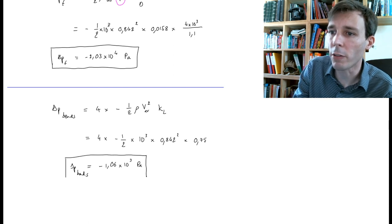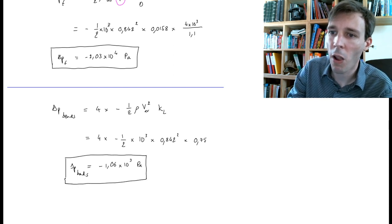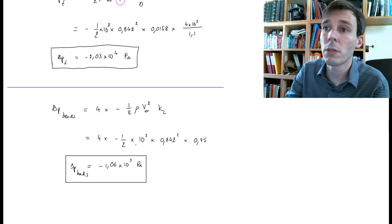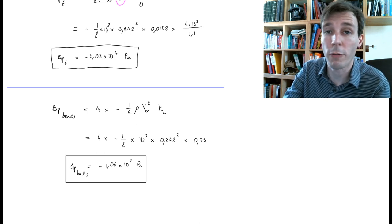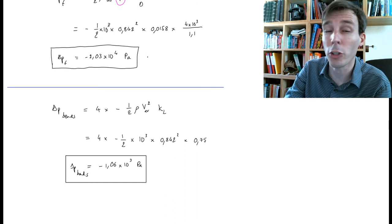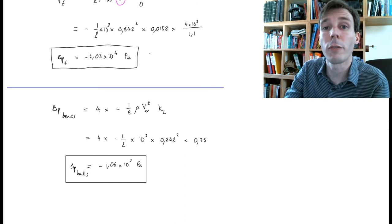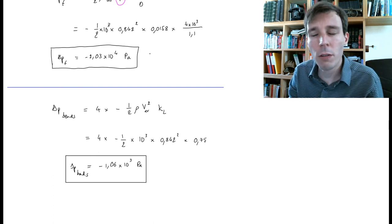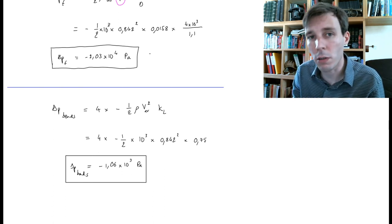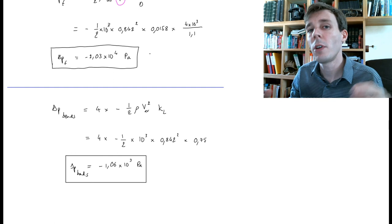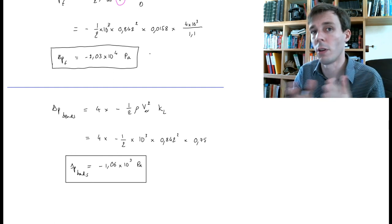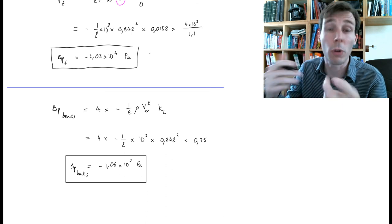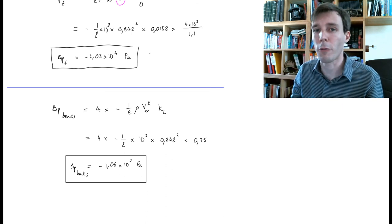The bend losses of −1.06 × 10³ Pa are about 20 times smaller than the friction loss of −2.03 × 10⁴ Pa. The smoother and rounder the bend, the lower K_L and the lower the losses. This is how we calculate the total pressure losses across the pipe — due to friction on the walls and due to turbulence losses through the bends.